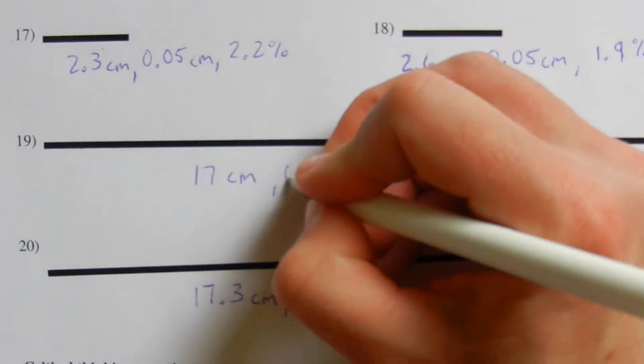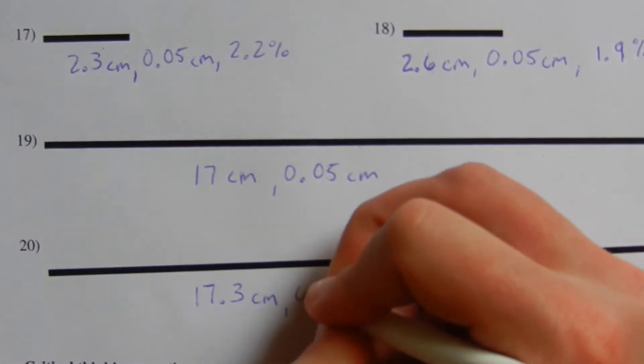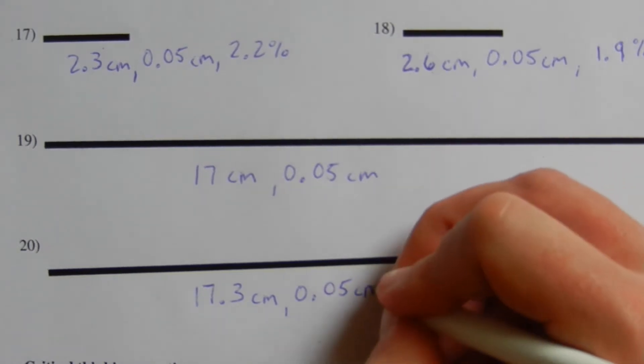Both of them have a max error of 0.05 centimeters, since we're rounding to the nearest millimeter. And when you divide that in half, you get 0.05 centimeters.